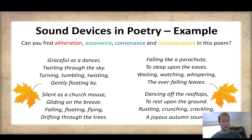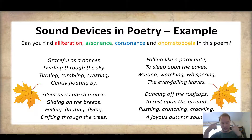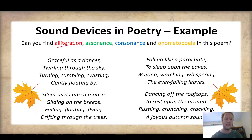You should pause the video and see if you can have a go yourself. We're going to write out a poem, color-code it, and find all the sound devices. Alliteration is coded red. For example: 'Twirling through the sky, turning, tumbling, twisting' — all those T words are alliteration. Down here we've got 'falling, floating, flying' — also alliteration.